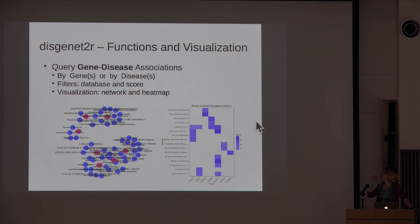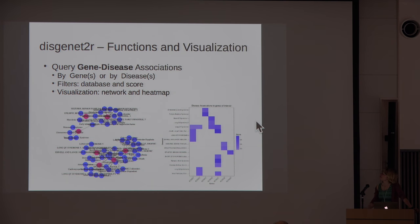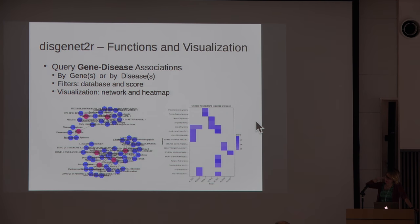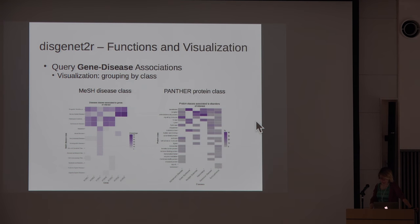You can query gene-disease associations by gene or a list of genes, or by disease or a list of diseases. Filters are provided: you can filter by database, or class of database such as curated, or search all databases. You can also filter by the DisGeNET score to refine results. Results can be visualized as networks or heatmaps. For example, querying a list of genes, you can visualize as a heatmap the score linked to each association. You can also group visualizations by MeSH classes or Panther classes.